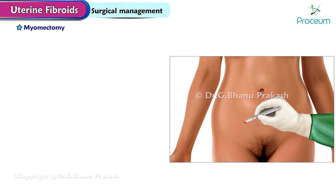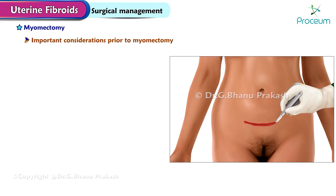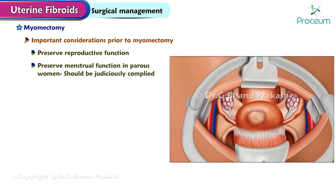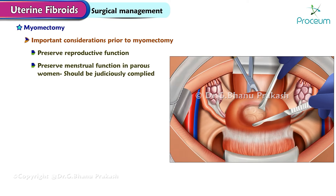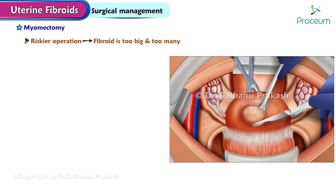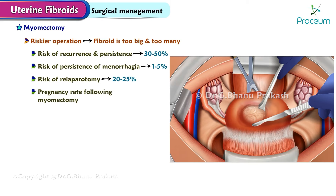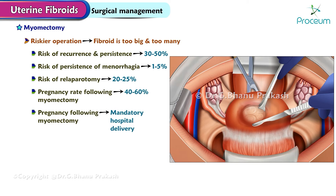Surgical management of fibroid uterus - Myomectomy. Important considerations prior to myomectomy: it should be done mainly to preserve reproductive function; the wish to preserve menstrual function in parous women should be judiciously complied with. Myomectomy is a riskier operation when fibroids are too big and too many. Risk of recurrence and persistence of fibroid is about 35-50%. The risk of persistence of menorrhagia is about 1-5%. The risk of relaparotomy is about 20-25%. Pregnancy rate following myomectomy is about 40-60%. Pregnancy following myomectomy should have a mandatory hospital delivery, although the chance of scar rupture is rare, a little more when the cavity is open.